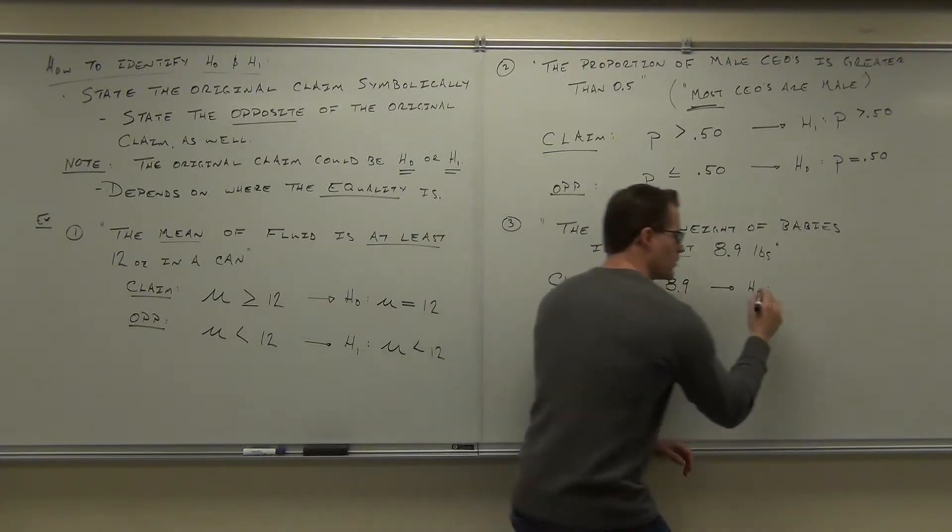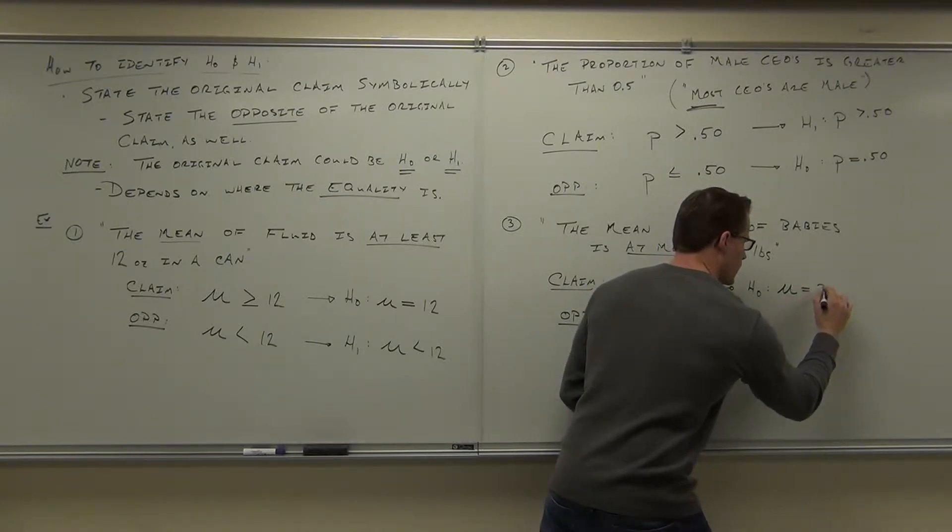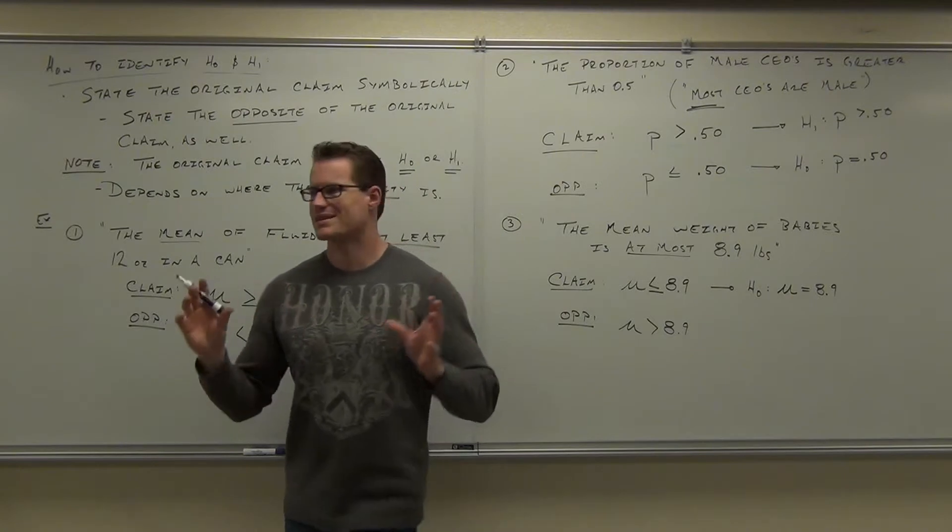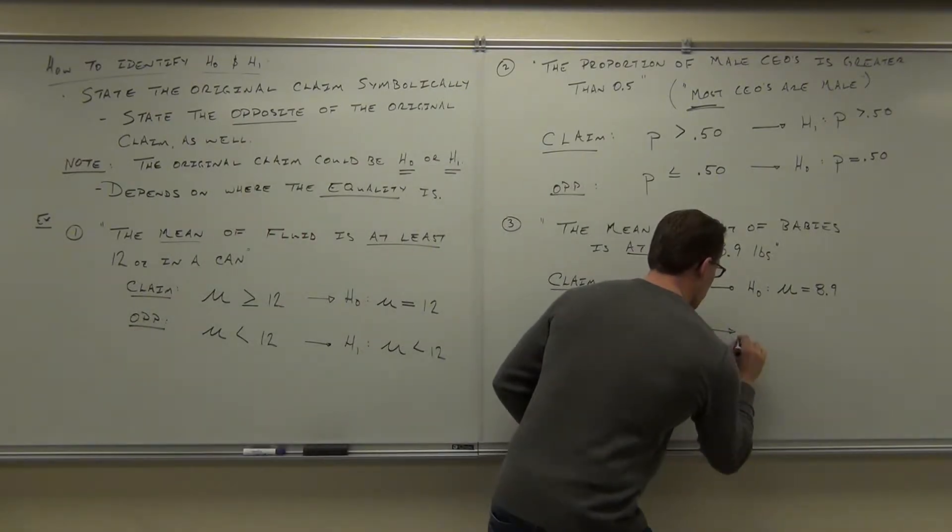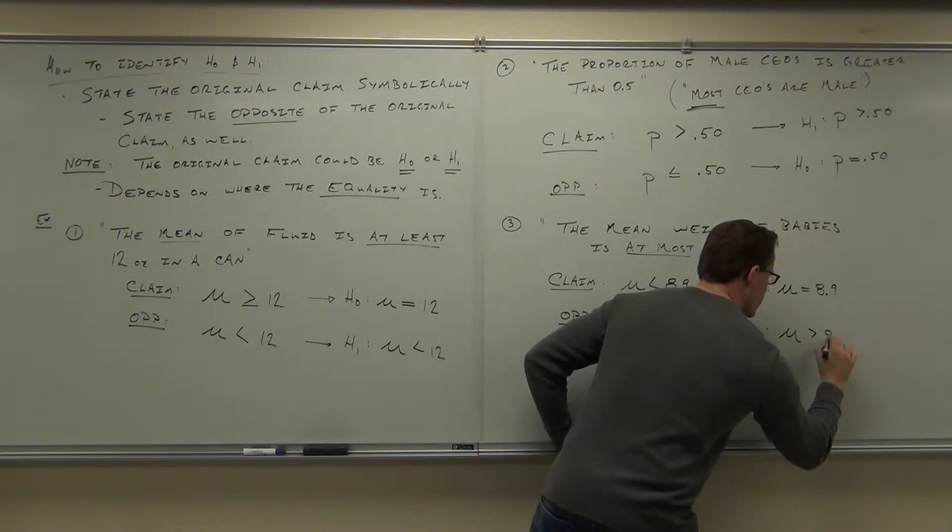We'll just simply rewrite it. Wherever the equality is, you omit that sign. You just put an equal sign. H sub 1, we don't change anything about that ever. μ is greater than 8.9.